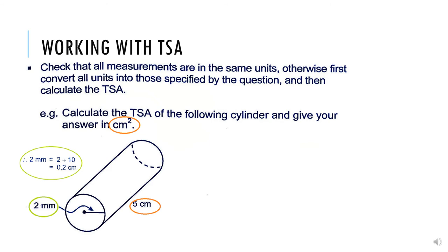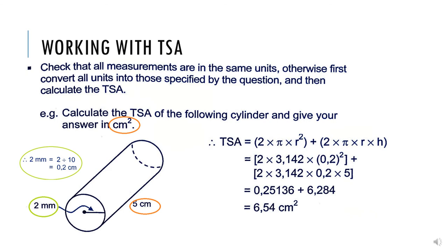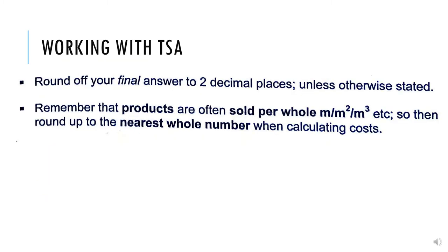We calculate the total surface area of a cylinder by taking 2 times pi times radius squared, plus 2 times pi times the radius times the height. We substitute those values into the formula, and in this example the final answer is 6.54 centimeters squared, as specified in the question. Round off your final answers to two decimal places unless otherwise stated.